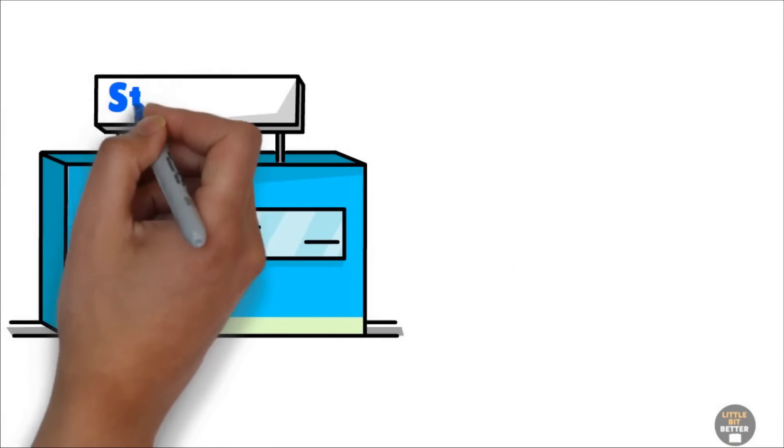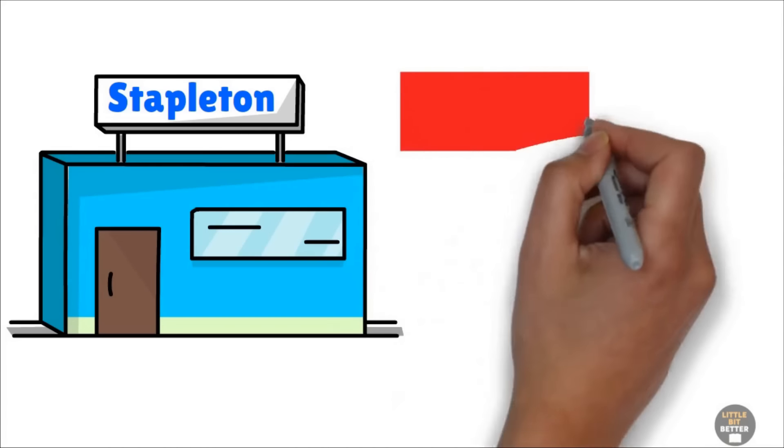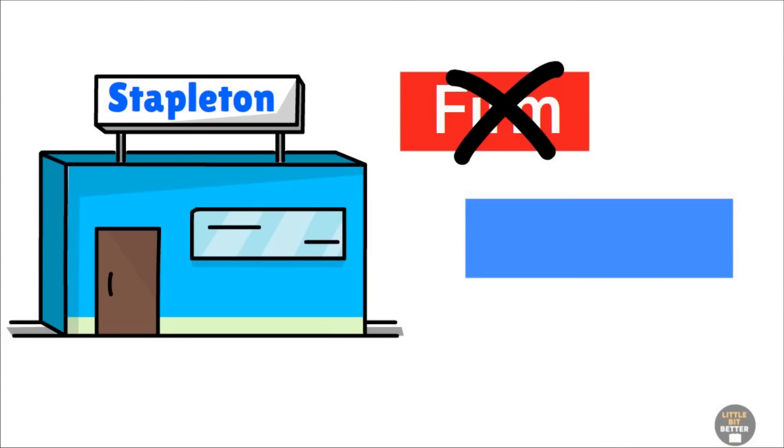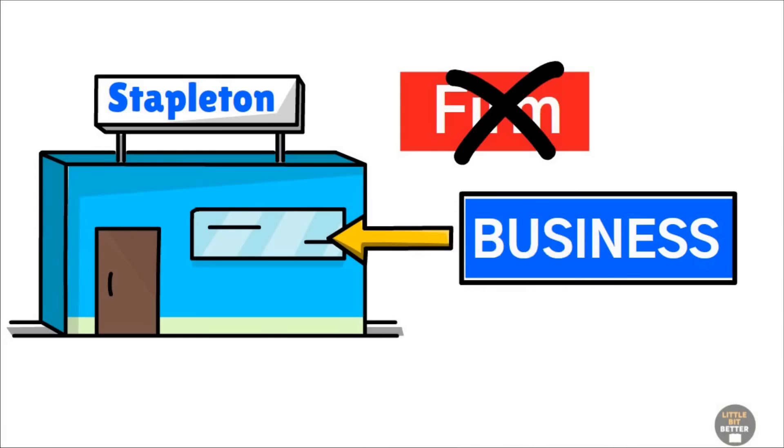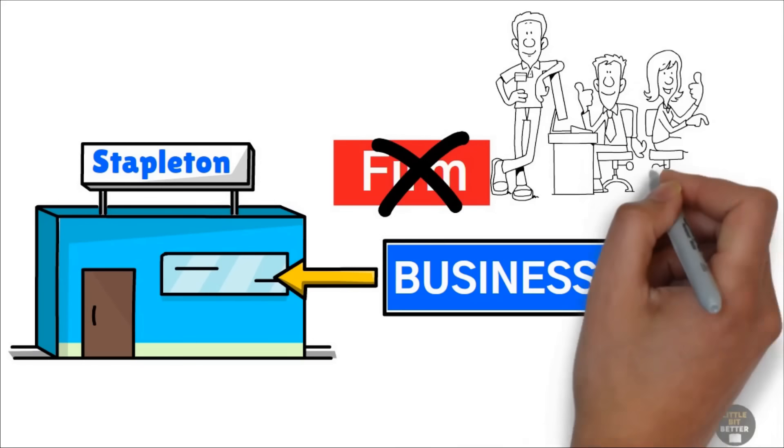Ted also recommended that Alex stop calling the Stapleton Agency a firm and start referring to it as a business instead. Ted said it was important to communicate to a buyer that Stapleton Agency is a real business, not just a collection of service providers.